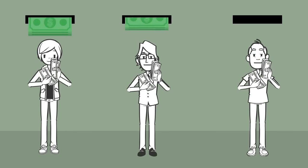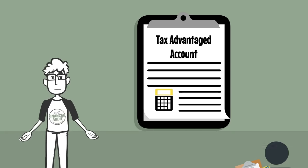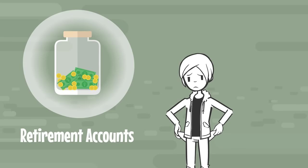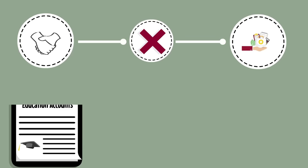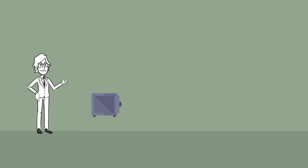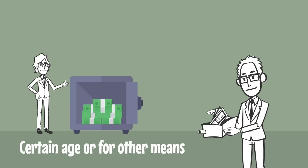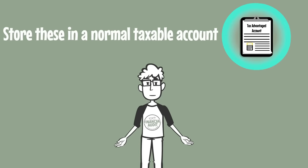One important advantage is that there's no minimum withdrawal age or withdrawal restrictions. Before choosing a tax-advantaged account like these, make sure you understand the withdrawal restrictions intimately. Retirement accounts cannot be withdrawn while you're young. HSAs can't be used for non-medical expenses, and education accounts for education expenses without incurring penalties. If for some reason you have the funds that need to be used before a certain age or for other means, then you'll need to store these in normal taxable accounts.